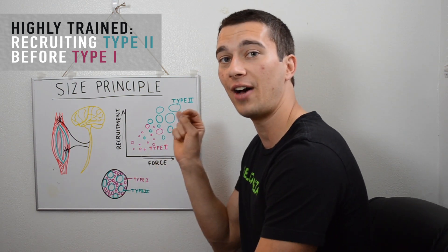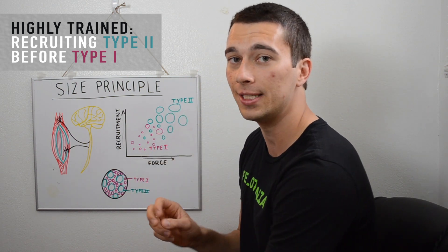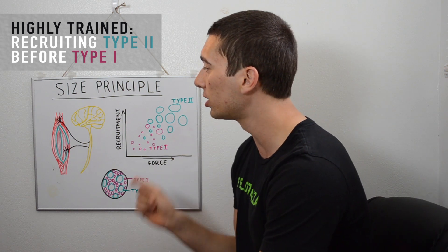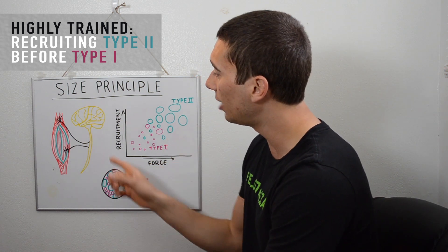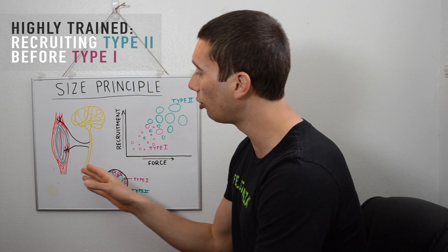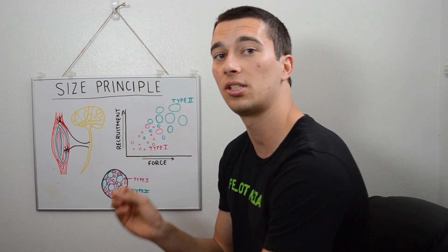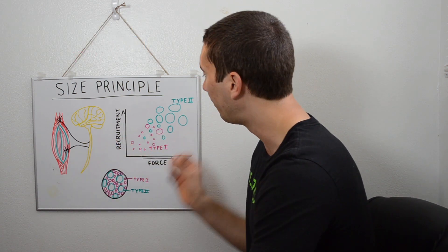This happens with a really high rate of force development, and that again comes down to having a really efficient neural pathway between the brain and those high threshold motor unit fibers.